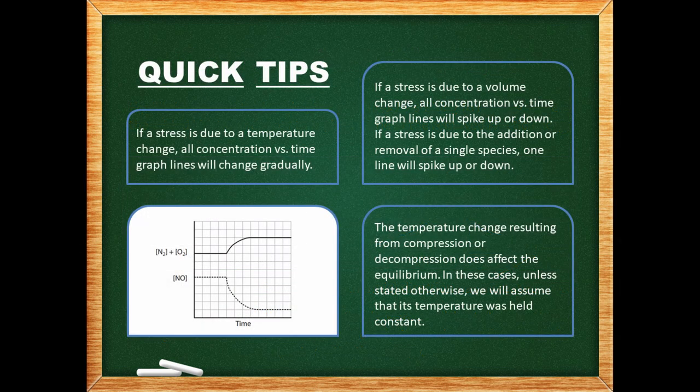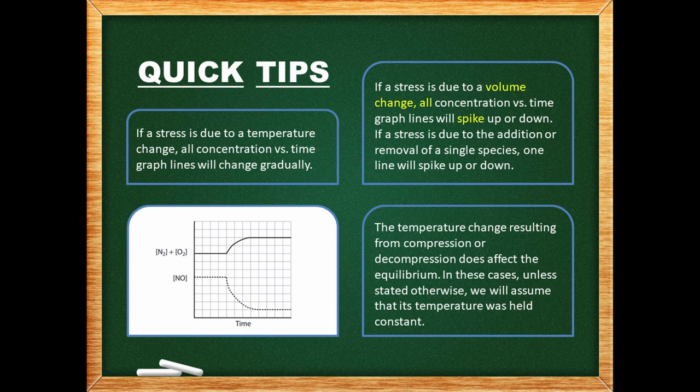Some quick tips: temperature changes do not appear on plots of concentration versus time, so the system responds to an invisible stress. The temperature of a system cannot change rapidly, so the response begins before the stress is complete — on these graphs, all the lines will change gradually. Volume and concentration changes, on the other hand, can be very sudden. When a stress is a sudden volume change, all the lines on a concentration versus time graph spike up or down. If the stress is due to the addition or removal of a single species, then only one spike appears on the graph.